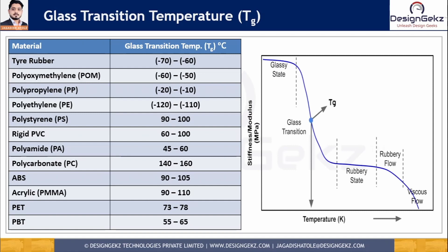Tg can be considered as the temperature at which stiffness and modulus start decreasing, and as the extreme temperature up to which a plastic can be used safely. For example, ABS has a glass transition temperature of 105 degrees Celsius, meaning above 105 degrees Celsius it will become soft or elastic. So if ABS is selected for applications where the temperature goes above 105 degrees Celsius, the ABS will deform and will not function properly.